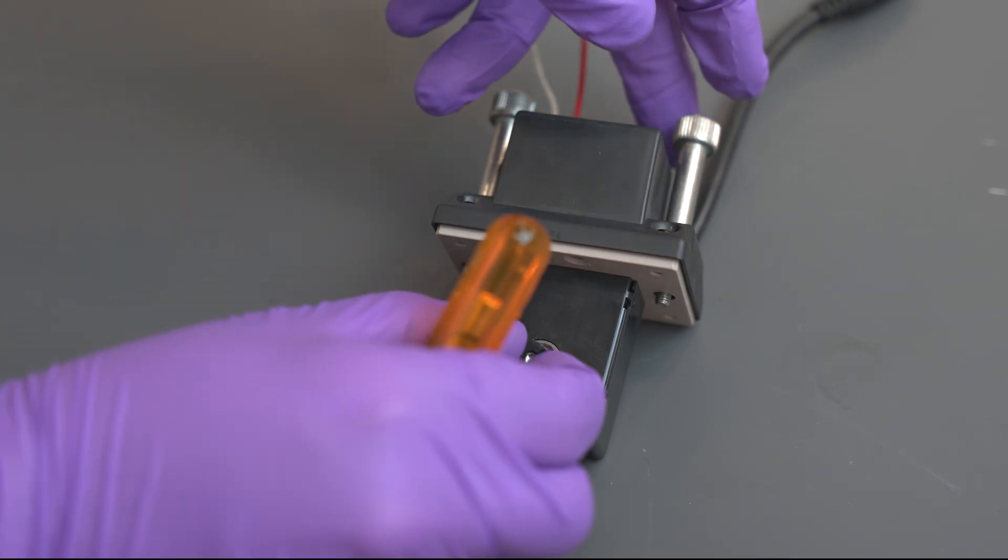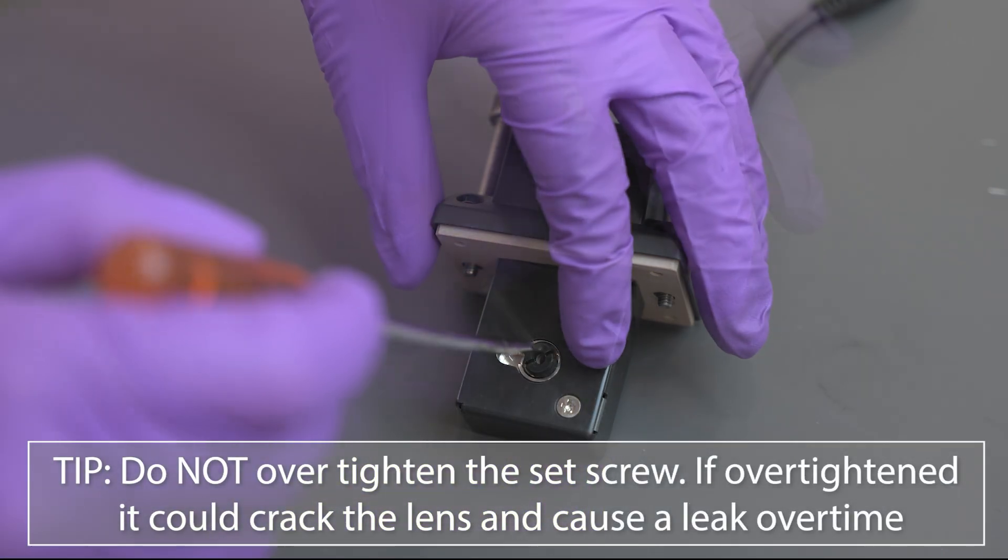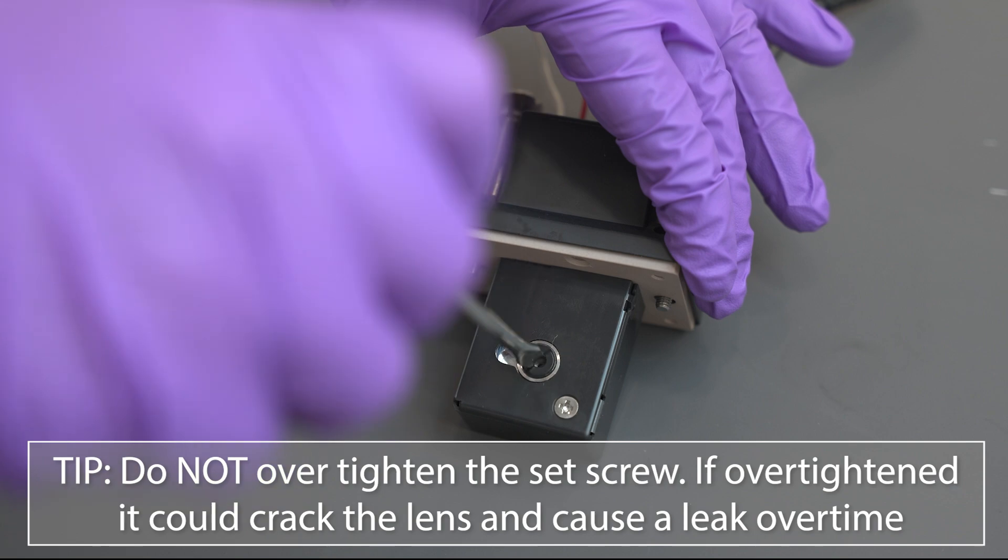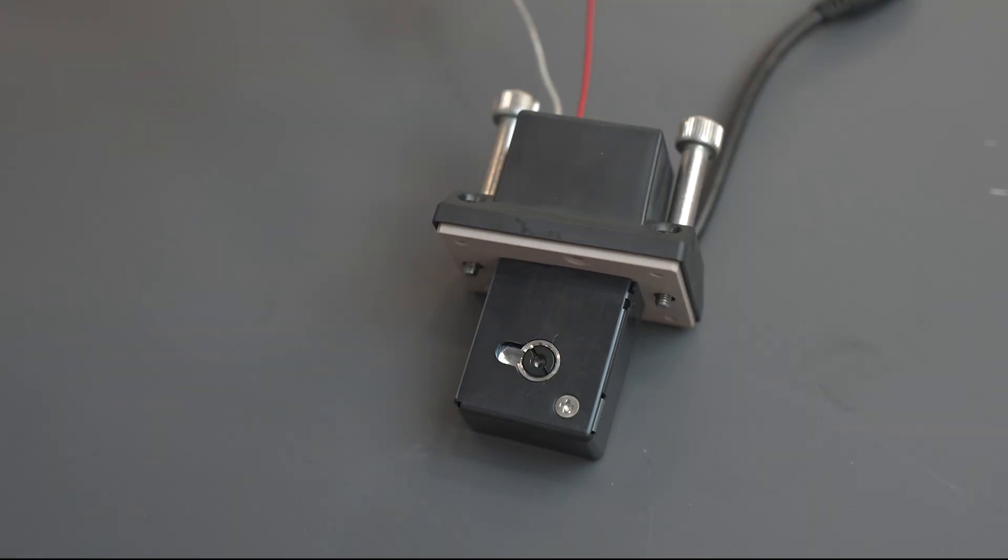Attach the set screw over the lens and tighten it. Do not over tighten the set screw. If over tightened, it could crack the lens and cause a leak over time. Repeat this step for the other side.